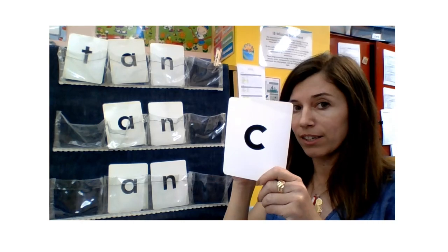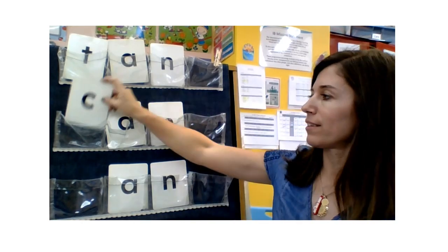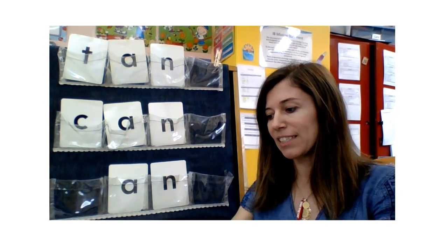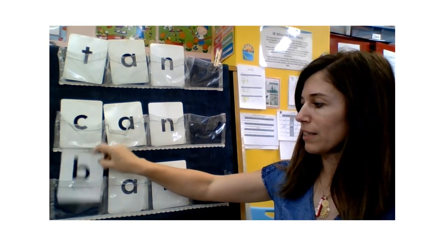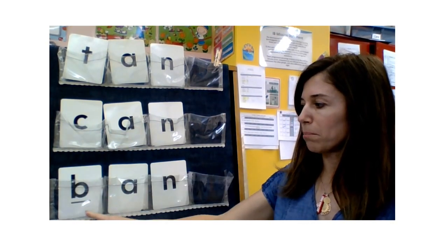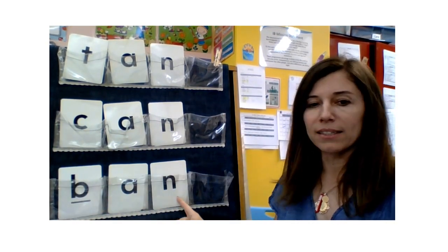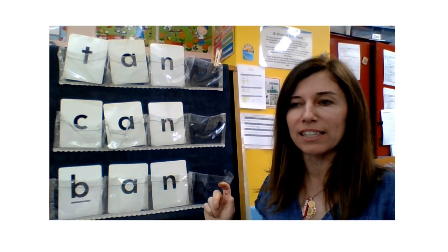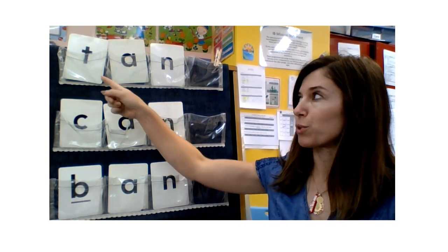If we add K: K, A, N — can. And if we add B, it will be B, A, N — ban. Listen to the an sound at the end of each word.